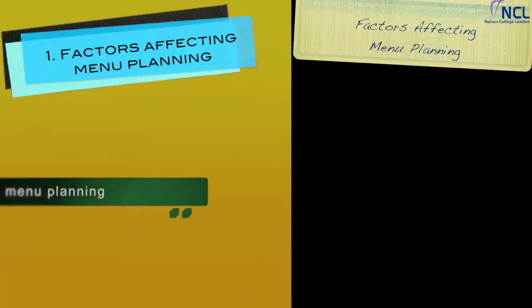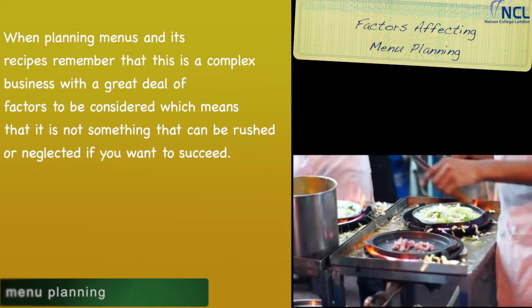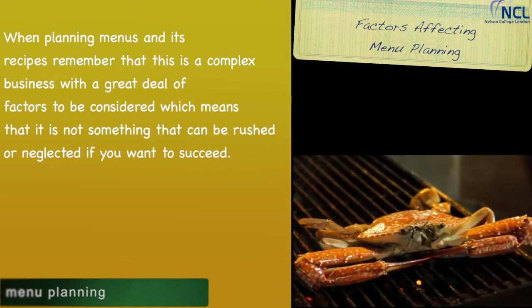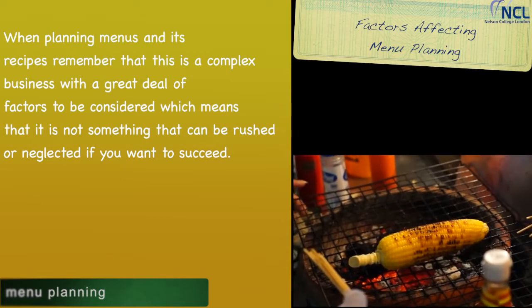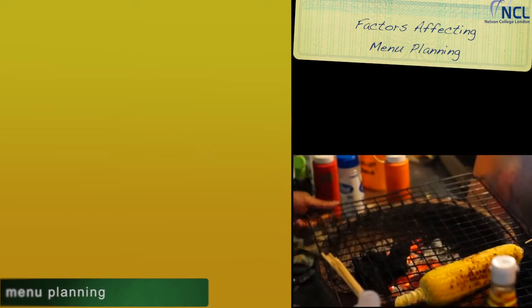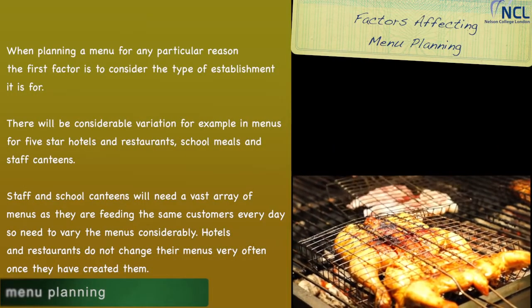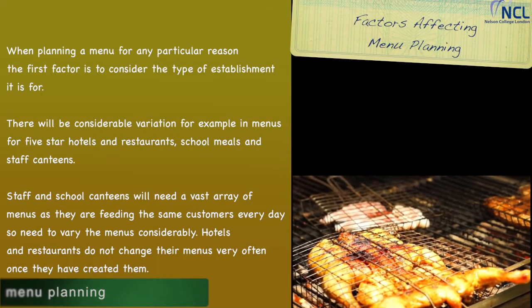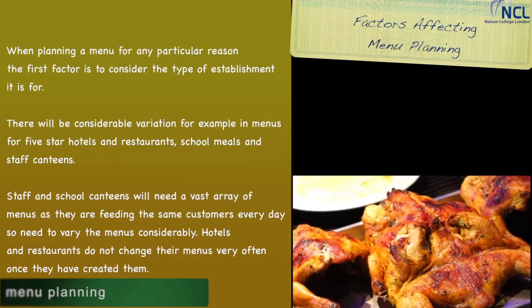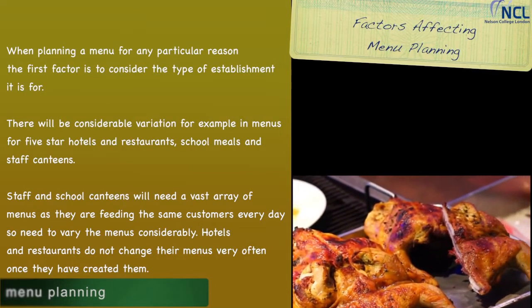When planning menus and their recipes, remember that this is a complex business with a great deal of factors to be considered — this is not something that can be rushed or neglected if you want to succeed. When planning a menu for any particular reason, the first factor is to consider the type of establishment it is for. There will be considerable variation, for example in menus for 5-star hotels and restaurants compared to school meals and staff canteens.